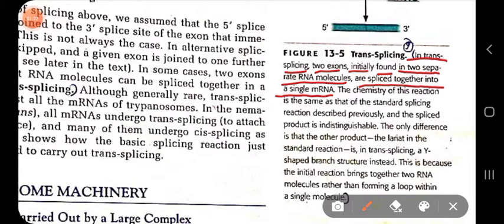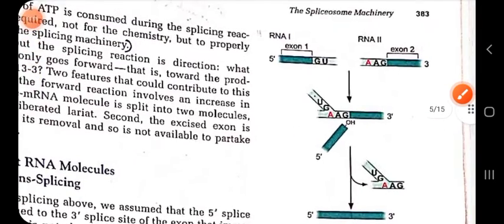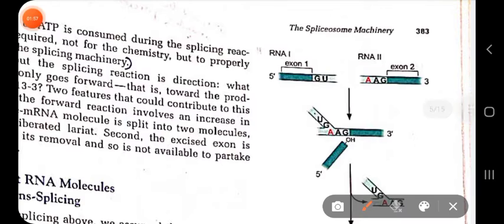The chemistry behind trans-splicing is the same as that of standard splicing reaction as described in the previous video. The spliced product is indistinguishable — you cannot find a difference between the splice products. It looks like the exons are joined in the same way as in cis-splicing.